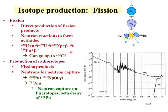One can continue successive neutron capture from plutonium up to americium, curium, berkelium, and californium — all the way up to californium-252. An overview of the fission process shows uranium-235 encountering a neutron, forming an excited uranium-236 state, which undergoes fission releasing more neutrons that can induce further fissions. The main driving factor is the large neutron capture cross-section of uranium-235.